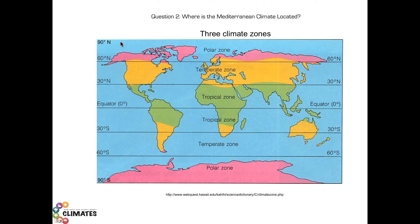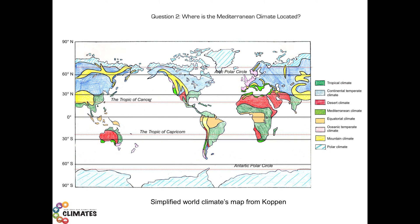In each of these zones, one or more climates can be identified. Therefore, world climate maps will be more or less complicated. Here is one such map — a world climate map based on the Copern climate classification. Several classifications exist. This one has been simplified from the original but still has eight identified climates.